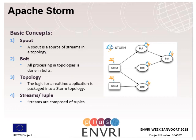The basic concept of Apache Storm is that it uses spouts as a source of streams in the topology. All processing within the topology is done in bolts. The topology itself is the logic for the real-time application, and all data within this topology is organized in streams and tuples.